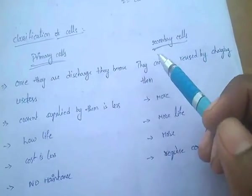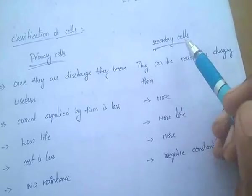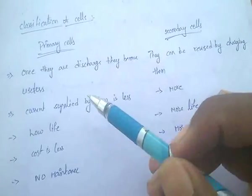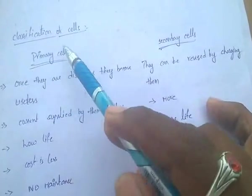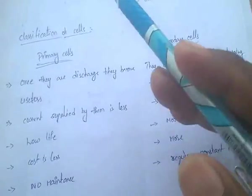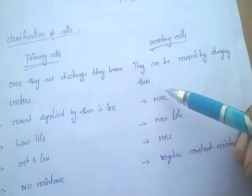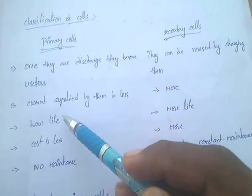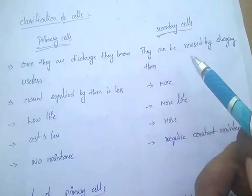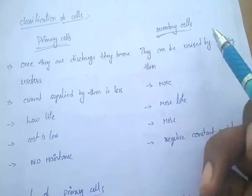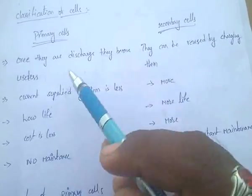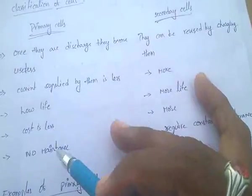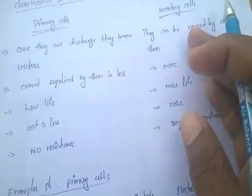Secondary cells can be reused by charging them. The current supplied by primary cells is very less, while the current supplied by secondary cells is more. Primary cells have low life as they discharge quickly. Secondary cells have more life because they can be recharged. The cost of primary cells is very less, while the cost of secondary cells is more.